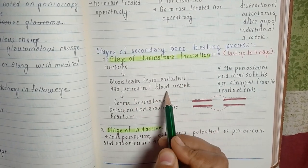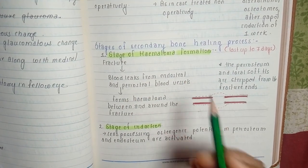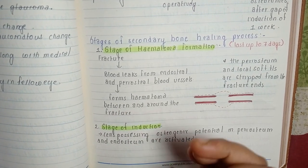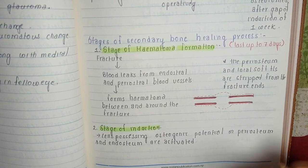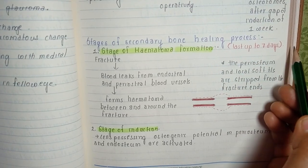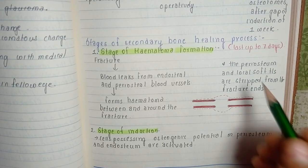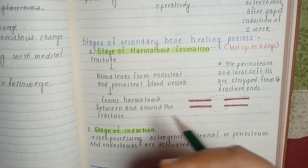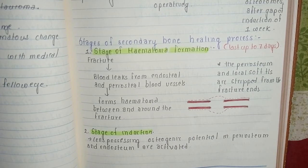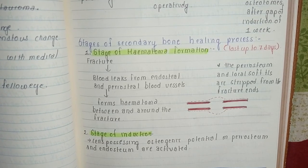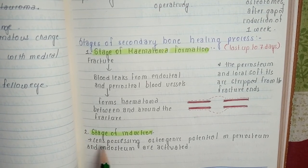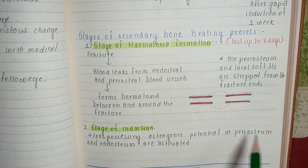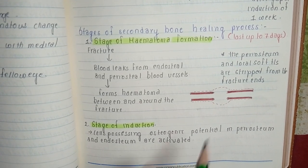In the first stage, when there is a fracture, blood leaks from the endosteal and periosteal blood vessels, which forms the hematoma — the clotting of blood. This lasts up to seven days, and the periosteum and local soft tissues are stripped off from the fracture. In the second stage, the stage of induction, cells possessing osteogenic potential in the periosteum and endosteum are activated.